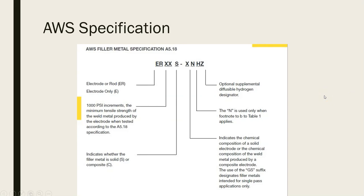Here is the actual specification from the American Welding Society. We have all the potential characters that you'll find in a classification for an electrode in GMAW, and each position tells you a different piece of information. But this is a lot to look at, and we're not going to be using all of these different characters in our introductory course — we're going to be focusing on the basics.